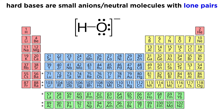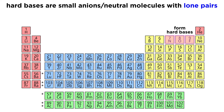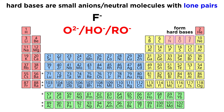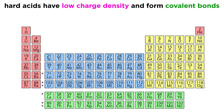Hard bases are small anions and neutral molecules with lone pairs. Bases derived from electronegative elements in the n=2 shell will be hard bases, like those of nitrogen, oxygen, and fluorine. This means that fluoride anions, any kind of oxygen anion like an oxide or a hydroxide, and even neutral nitrogen atoms in ammonia or other amines are classified as hard.